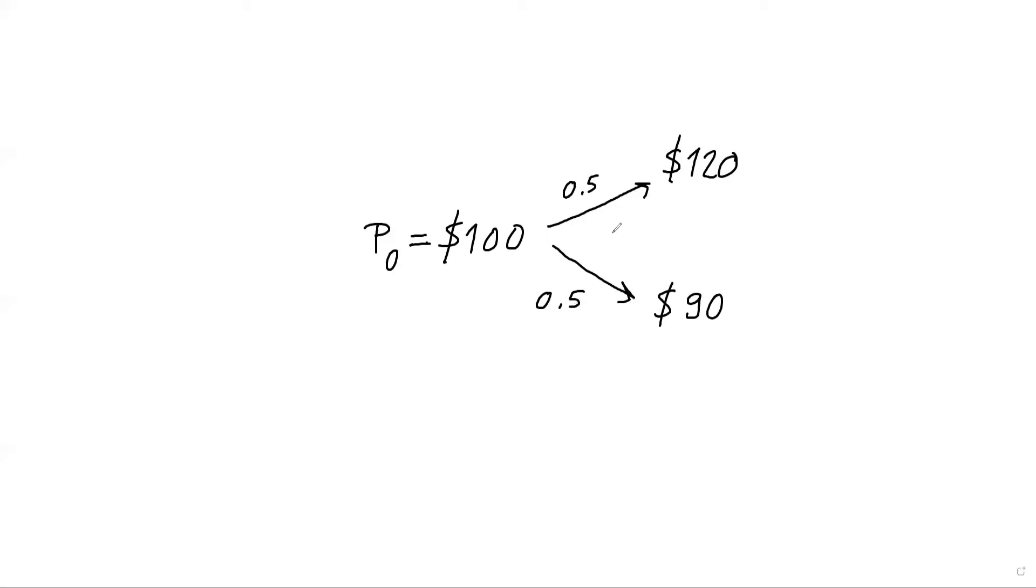So what is our expected return? If the price goes up to $120, we'll get 20% return. If it goes down to $90, our return will be minus 10%. So expected return is a probability weighted average of these return observations. So what I need to do, I need to take each possible return outcome and weigh them by their respective probabilities.